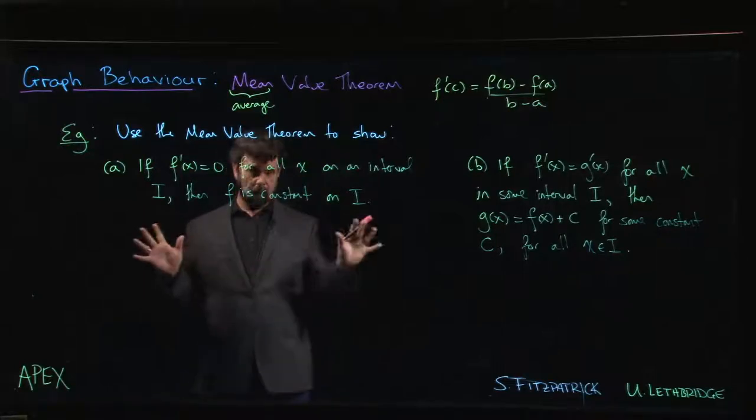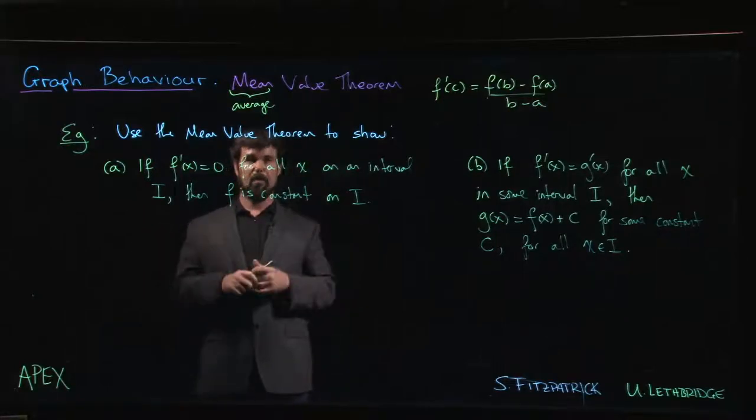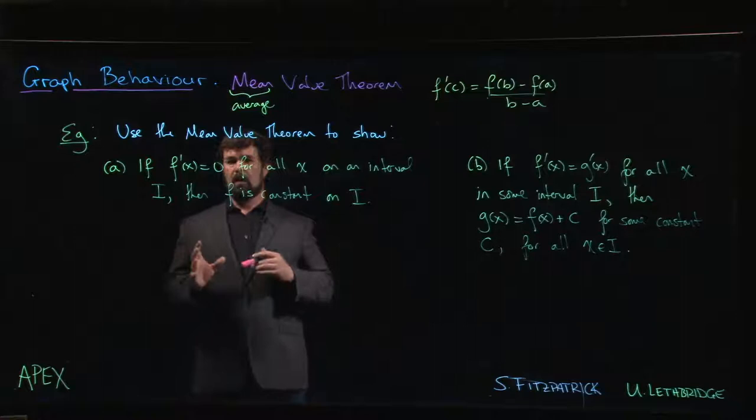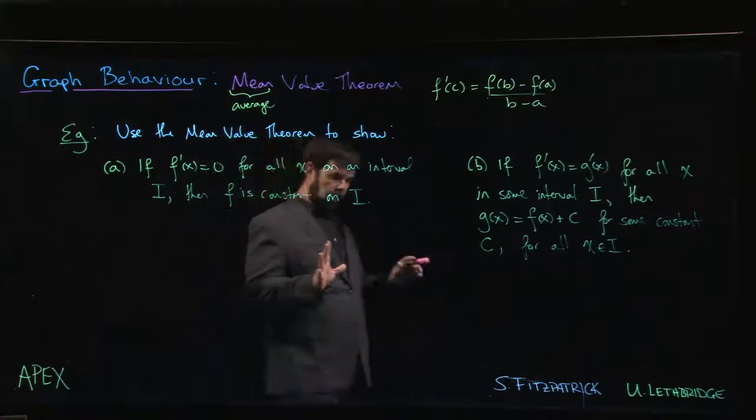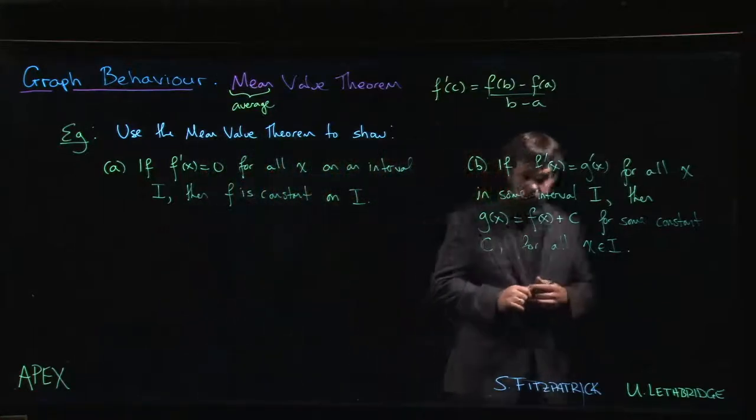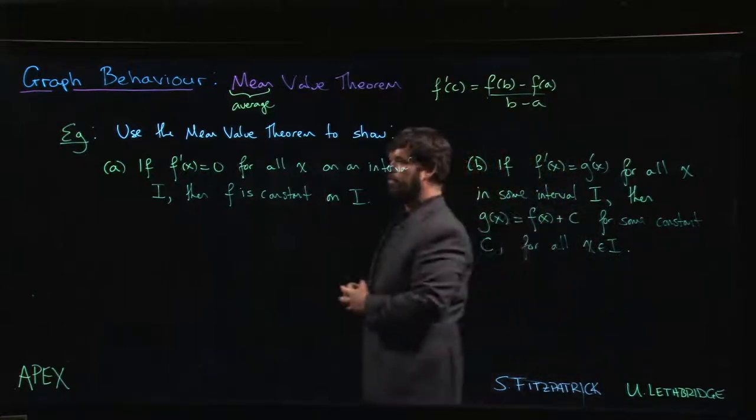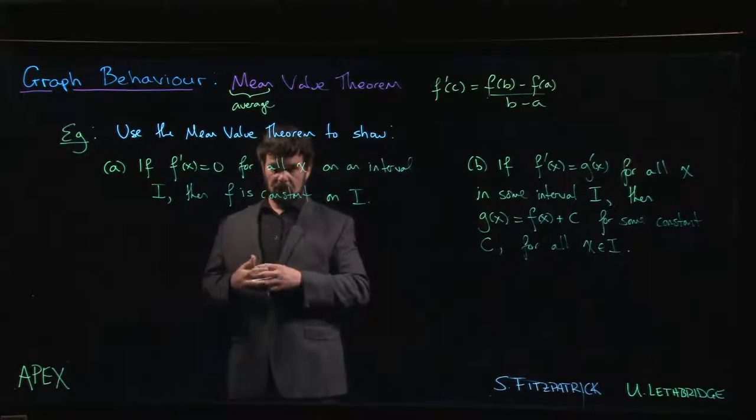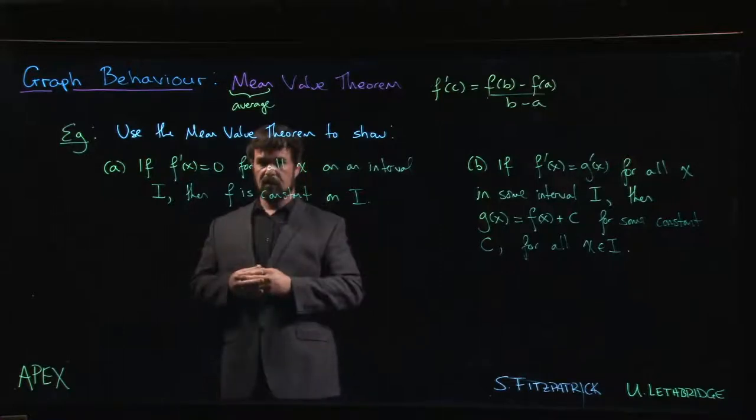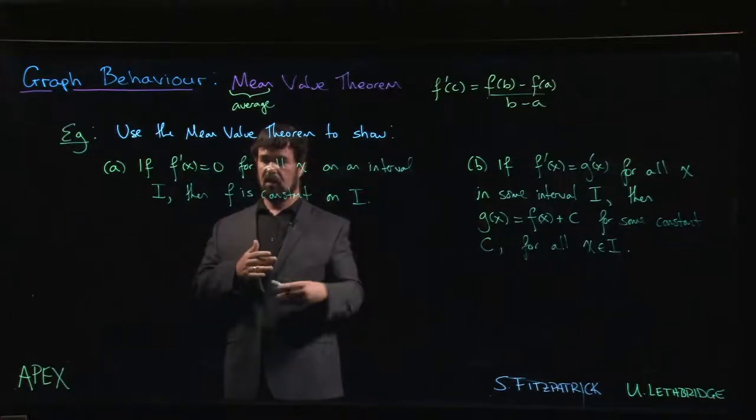All right, so here are two technical results that we can establish using the mean value theorem. The first one probably seems familiar - you probably feel like you already know that this is true. But what you already know is that if a function is constant, then the derivative is zero.